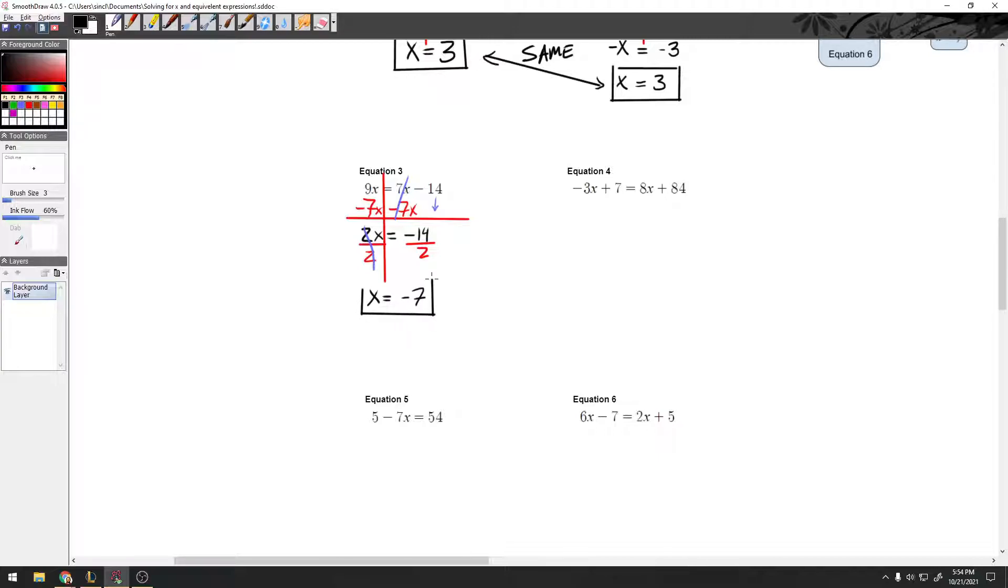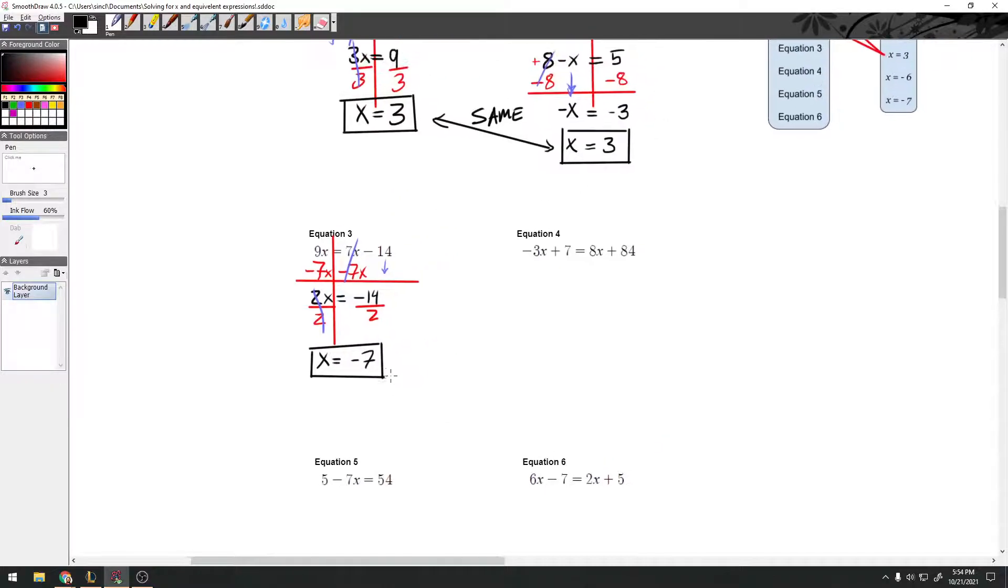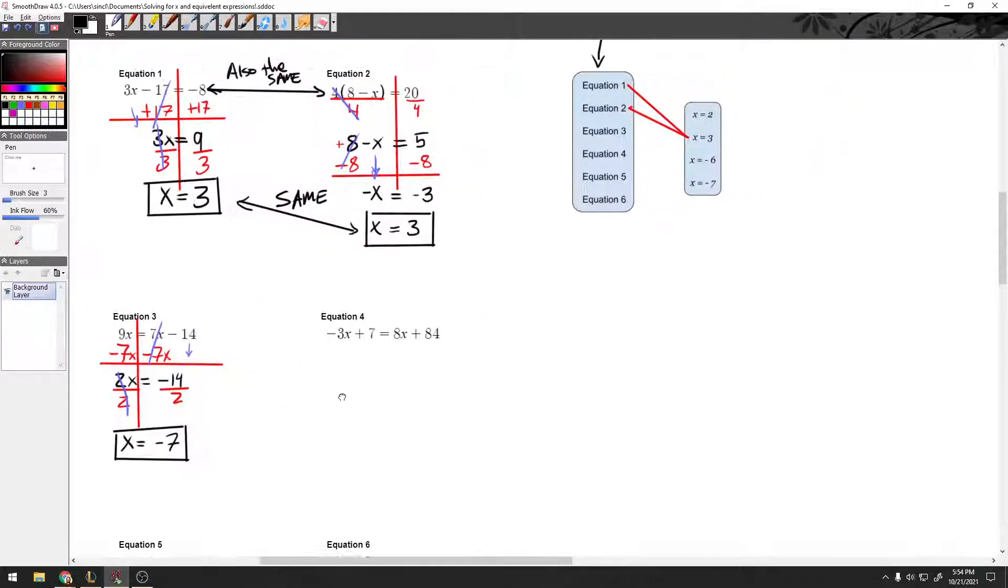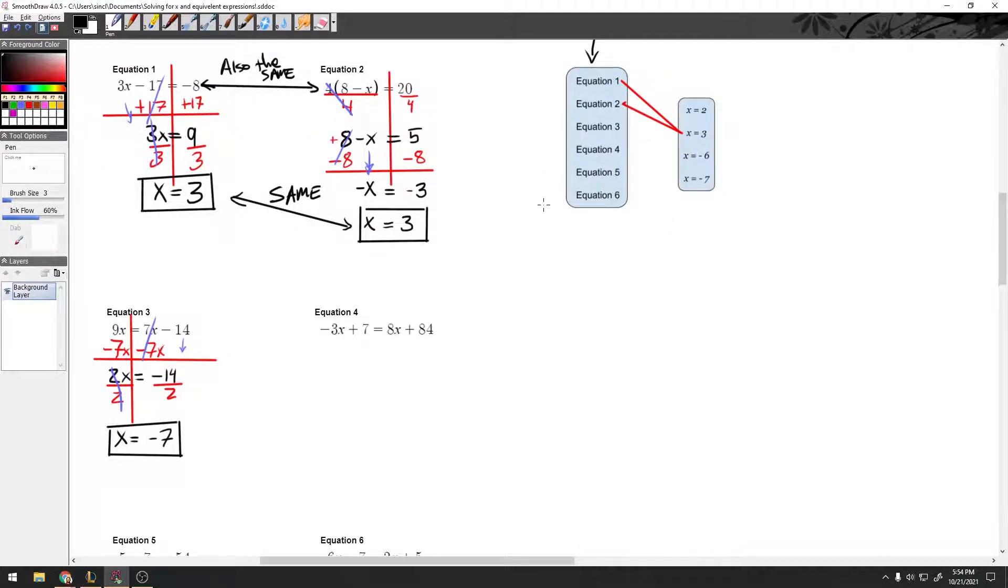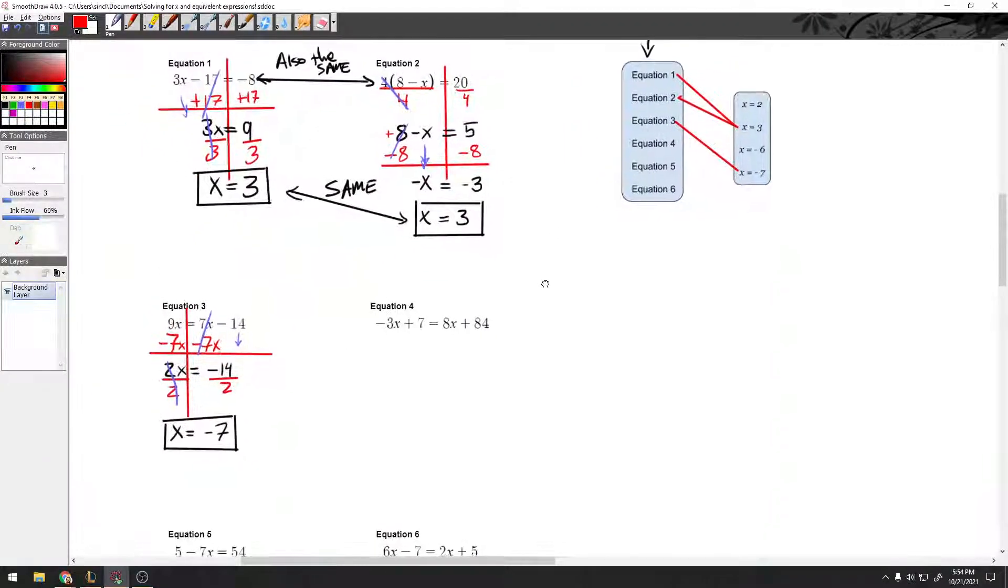Now, this answer means that it is different. So, these ones are not equal, so we are not going to have them coming together here. Let's go to equation 3. It's going to go to negative 7.